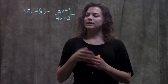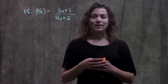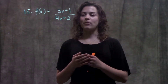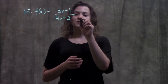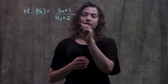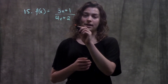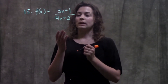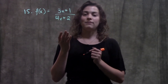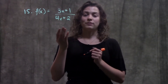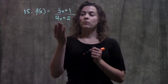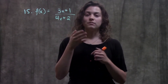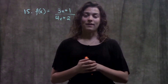Looking at this function, I see that I have a fraction. And if you remember, fractions can never have zero on the denominator because you can never divide by zero. So when I'm thinking about invalid values for x, wherever this denominator equals zero, that would be invalid.